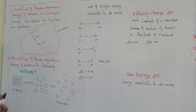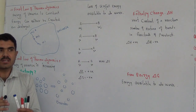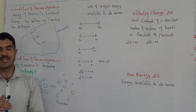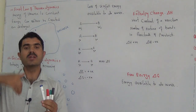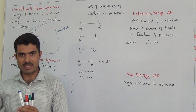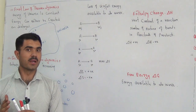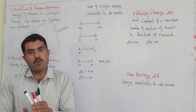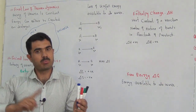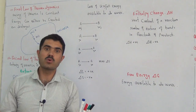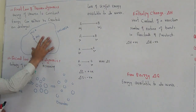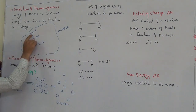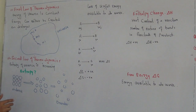The first law of thermodynamics says that the energy of the universe remains constant. It can neither be created nor destroyed. Whatever amount of energy is in the universe, that energy will remain. It will not decrease or increase. However, energy will be converted from one form into another form, but it will never disappear or be destroyed. For example, let's suppose our universe has 100 joules of energy.